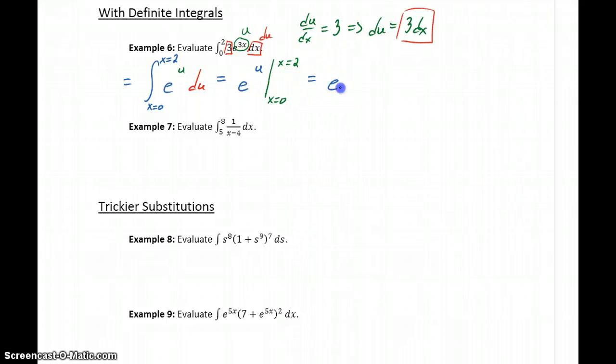So replacing u with 3x, this will give us e to the 3x, which we want to evaluate from x equals 0 to x equals 2.